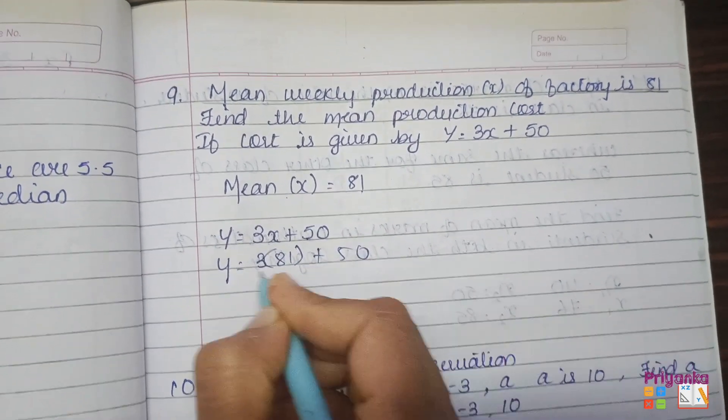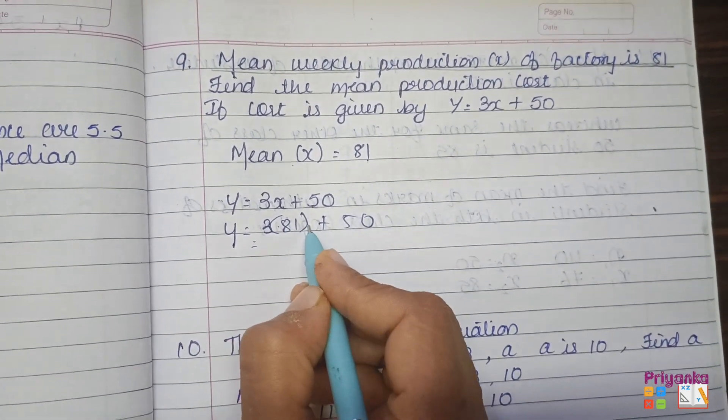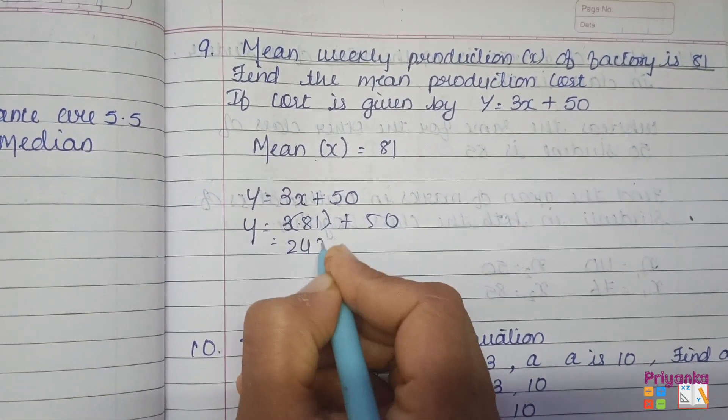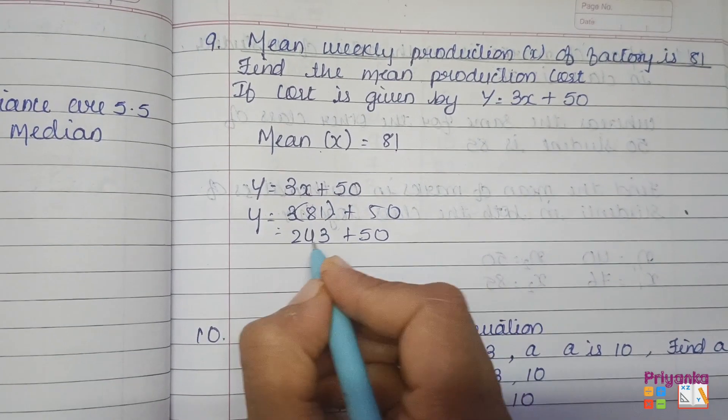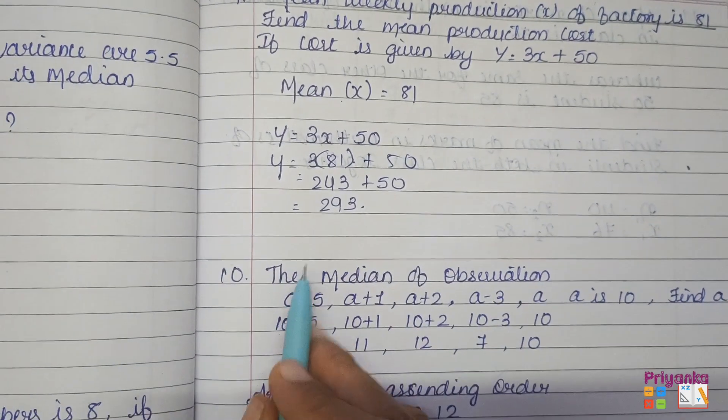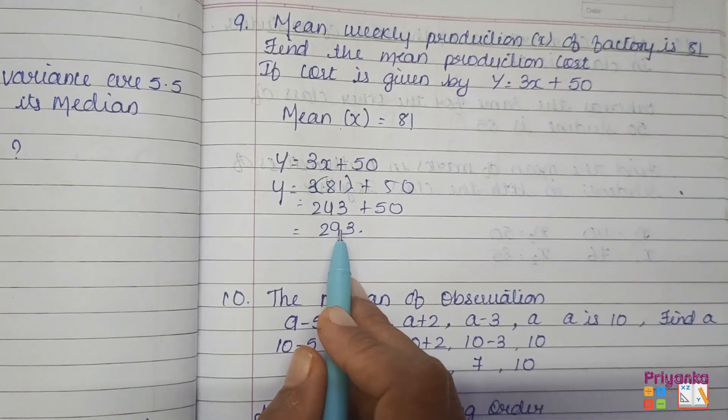Plus 50. 3 into 81 is 243 plus 50. Add them both. You will get 293. So the mean of production cost is 293.